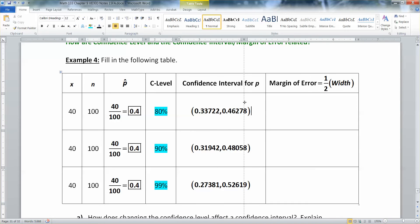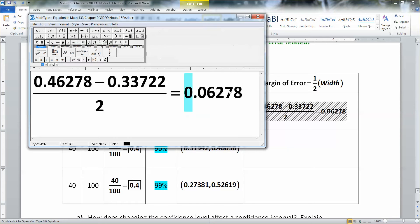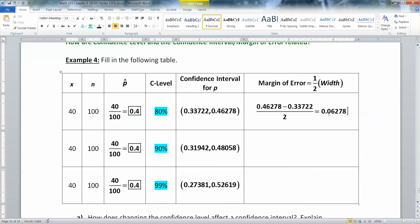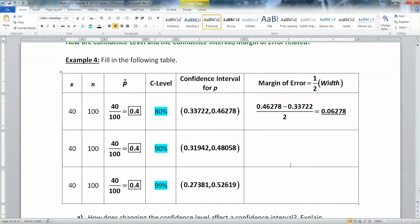There they are in there. Now I want to find the margin of error. So the margin of error, remember, is half the width. So now we need to find that margin of error. We're going to have to do the half width thing. So we want to take the high number, the upper number, we want to subtract the lower number and divide it by two.